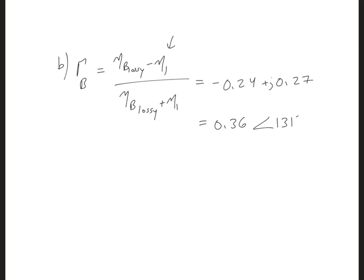In part B, we can find the reflection coefficient at interface B, and we're going to use the lossy eta B. And we're not using the Smith chart for this because that would not take into account material number one. So when we plug everything in, we get 0.24 plus j 0.27, and in polar form, that's 0.36 at an angle of 131 degrees.